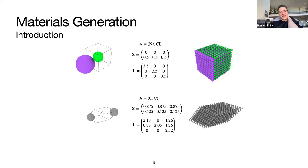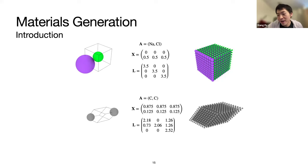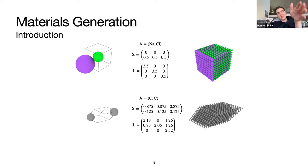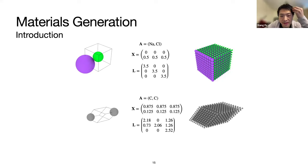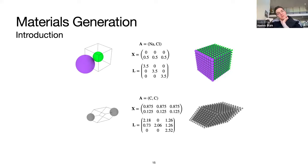To recap the AXL representation: that is atom types (A), atom coordinates (X), and lattice parameter (L). Atom types and coordinates are familiar from molecules or proteins. What's new is the lattice parameter — a three-by-three matrix — which tells you how to tile space. It is actually six-dimensional, because it has six degrees of freedom: three side lengths and the three angles between them.